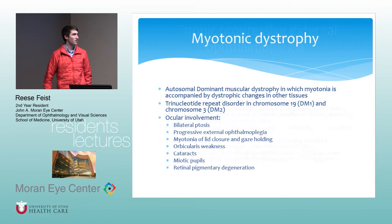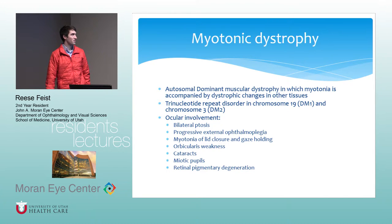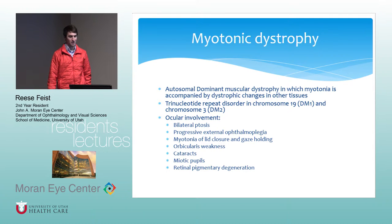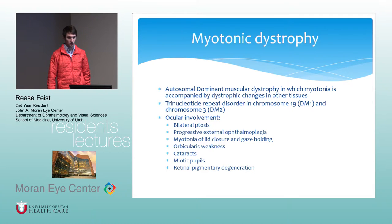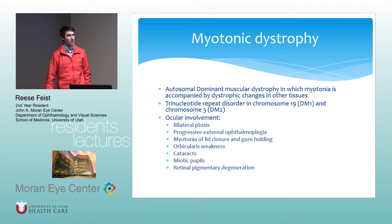Myotonic dystrophy is one that doesn't come to mind as much for double vision, but it can cause it. It's an autosomal dominant muscular dystrophy with trinucleotide repeats on chromosome 19 or chromosome 3. Classic ophthalmic features include early cataracts — the Christmas tree or polychromatic cataracts. You can also get bilateral ptosis, progressive external ophthalmoplegia, myotonia of lid closure and gaze holding, orbicularis weakness, miotic pupils, and retinal pigmentary degeneration.